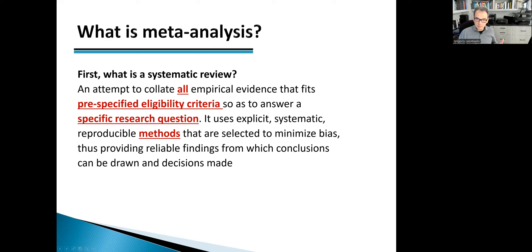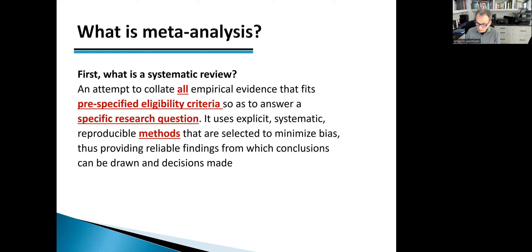To answer what is a meta-analysis, we first have to answer what is a systematic review. A systematic review is an attempt to collate all empirical evidence that fits pre-specified eligibility criteria to answer a specific research question. It uses explicit, systematic, reproducible methods designed to minimize bias and provide reliable findings from which conclusions can be drawn and decisions made.